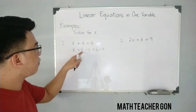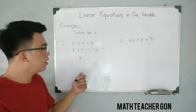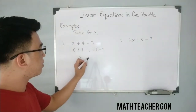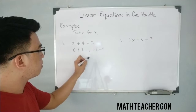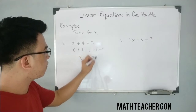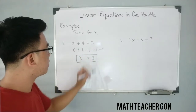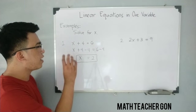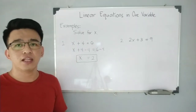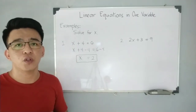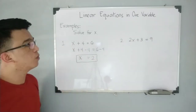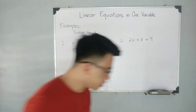Simplifying: x remains, and 4 minus 4 equals 0. On the other side, 6 minus 4 is equal to 2. Therefore the value of x — the value of the variable that will satisfy this equation — is equal to 2. Now let's move on to item number 2.